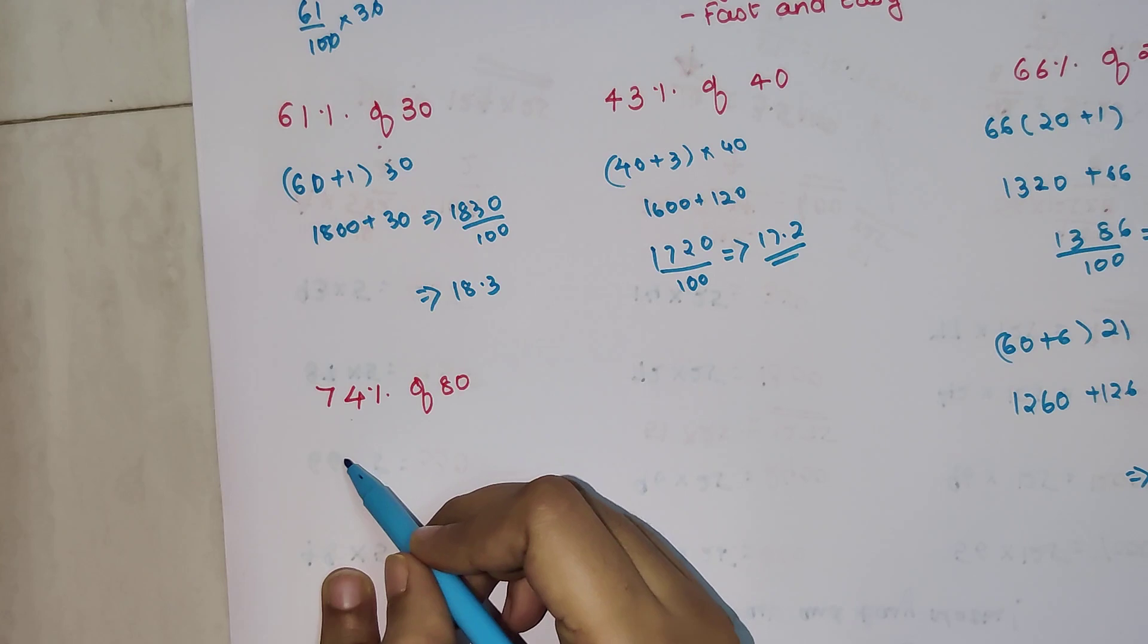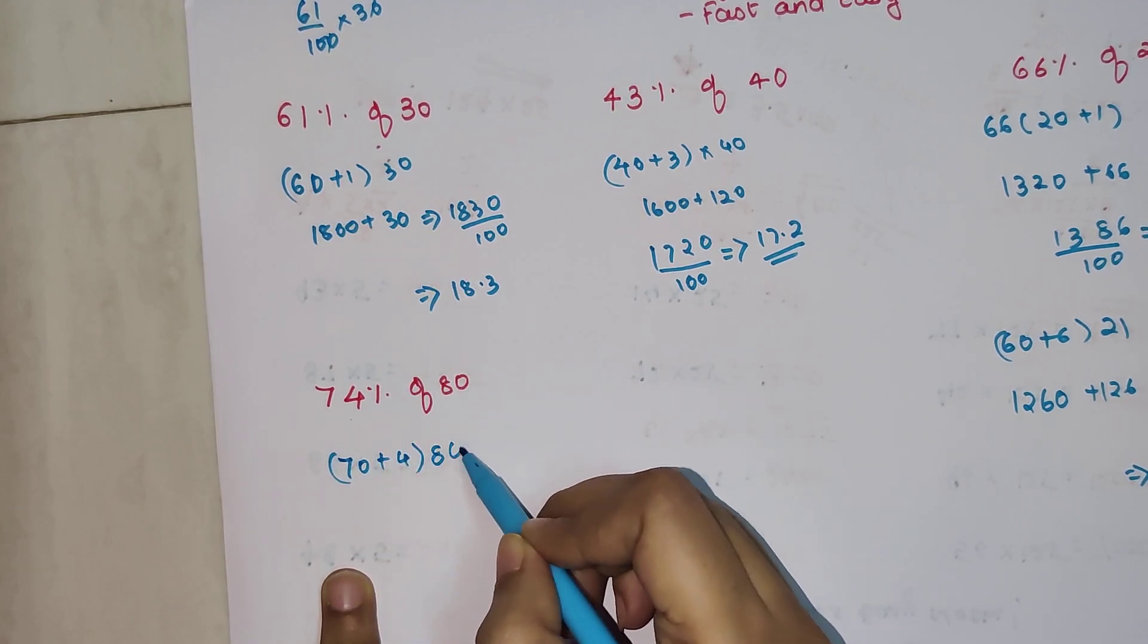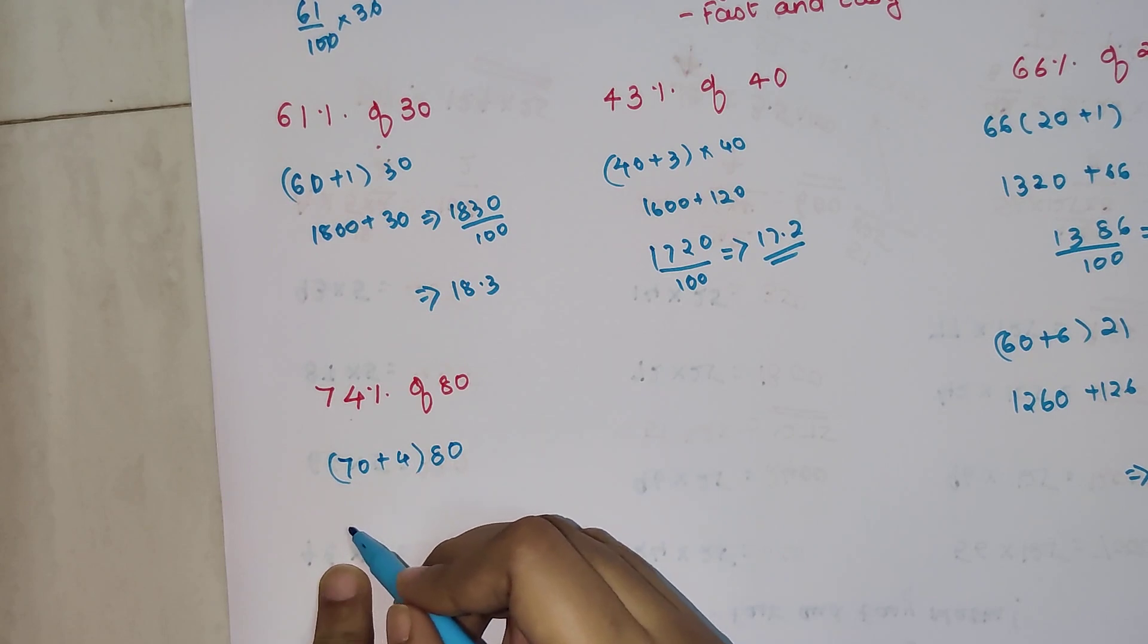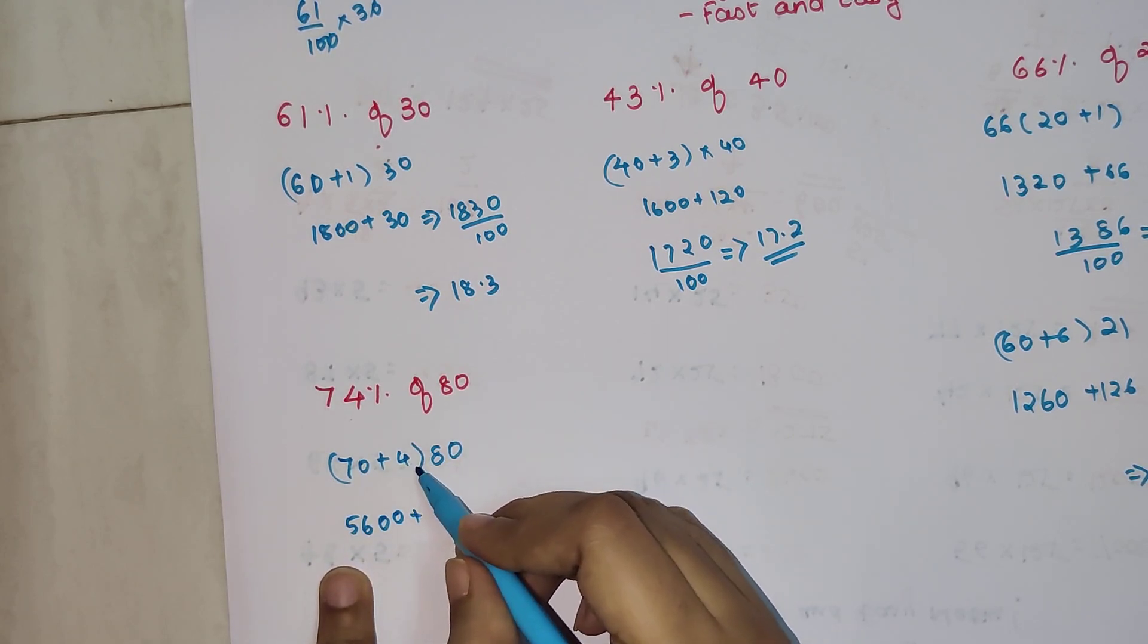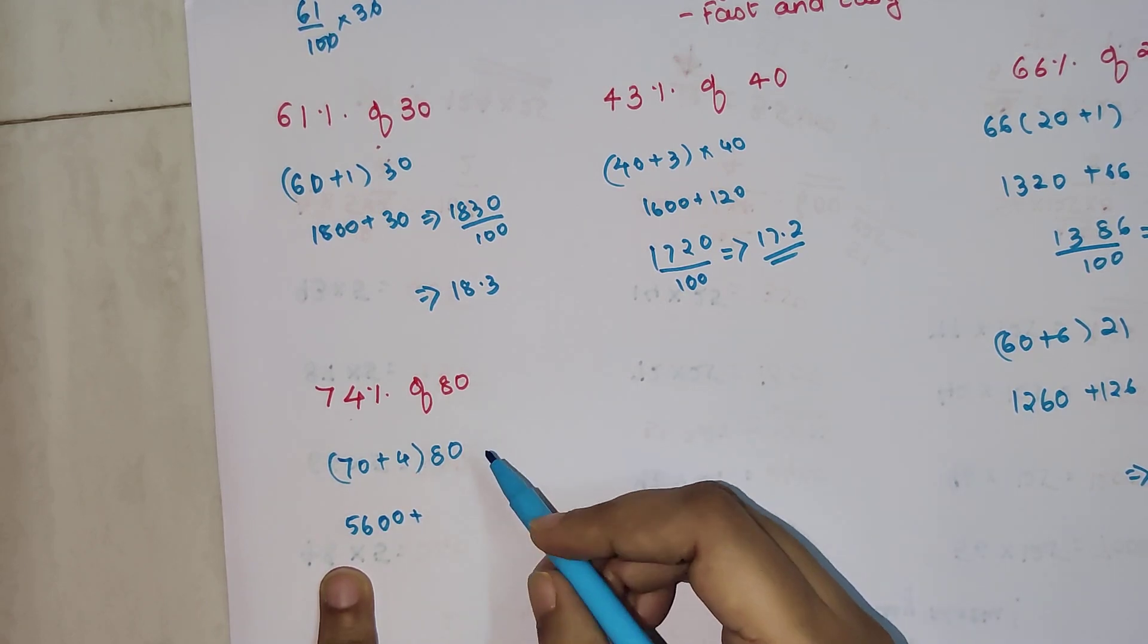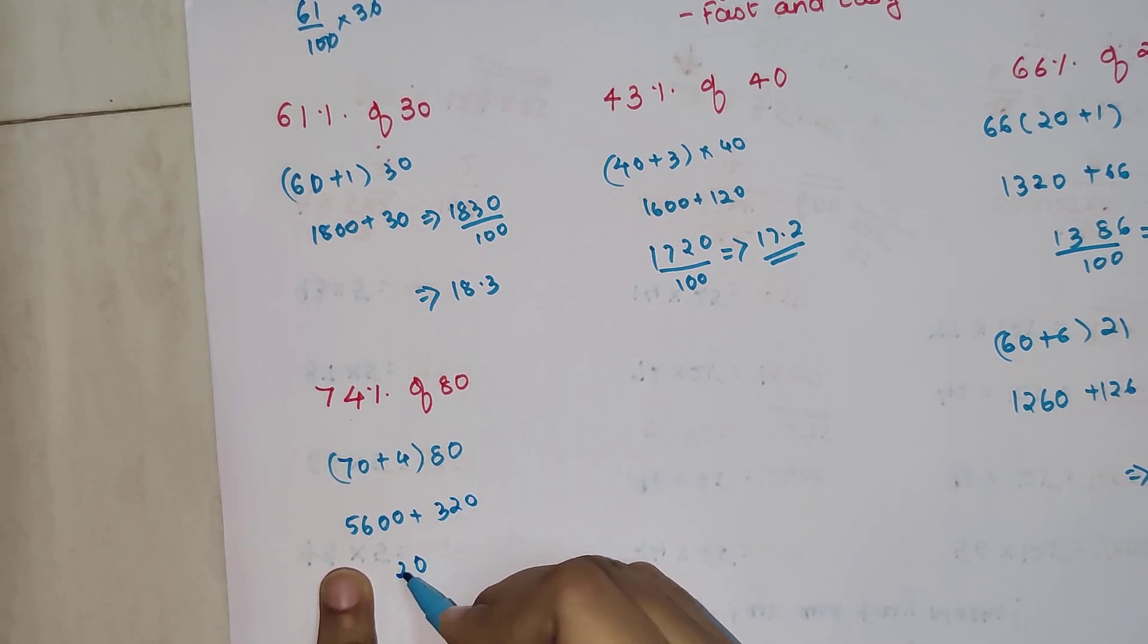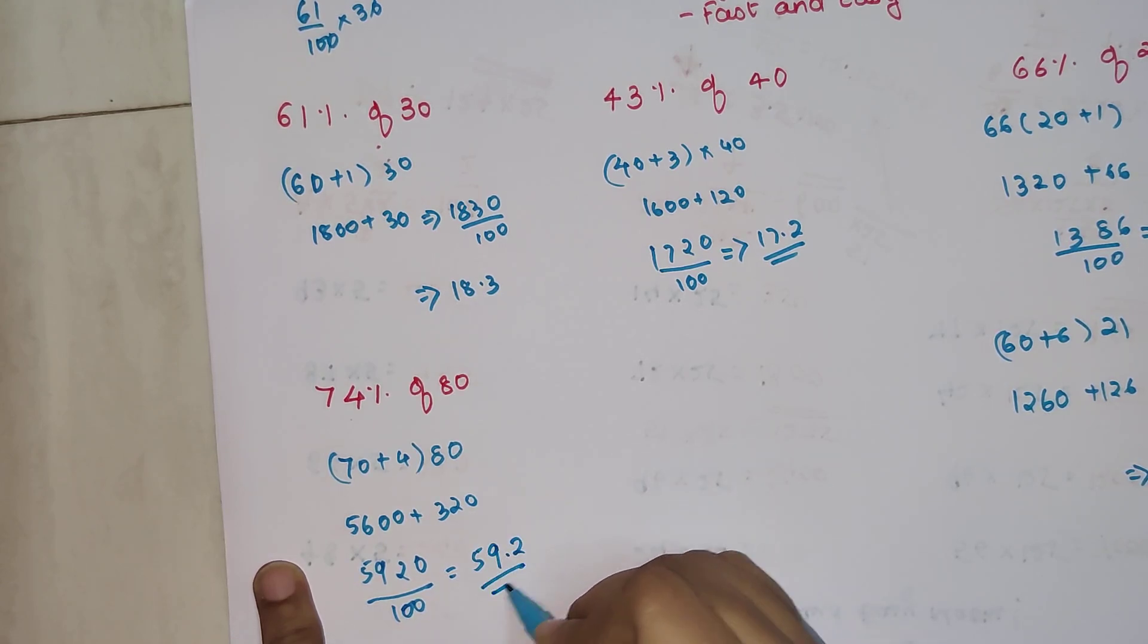This is going to become 70 plus 4, and when multiplied by 80, so 70 multiplied by 80 you get 5600 plus 4 multiplied by 80 will get 320. So you will get 5920 upon 100. Your final answer is 59.2.